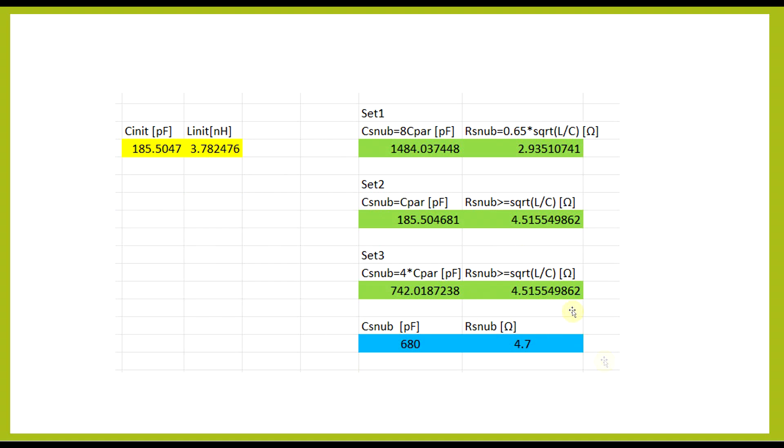Now, based on the actual components I have at my disposal, I went with this bottom set. So the capacitance is somewhere between 1 and 4 times the parasitic capacitance, closer to 4 times, and the resistance is larger than the square root of the parasitic inductance divided by capacitance, so 4.7 ohms. So these two components are the ones that I will be going with in my final test.